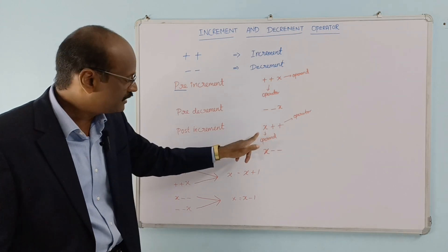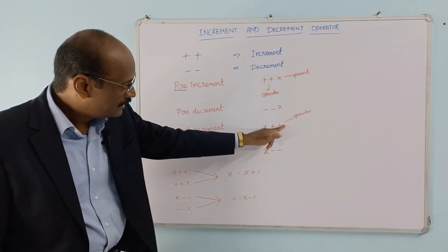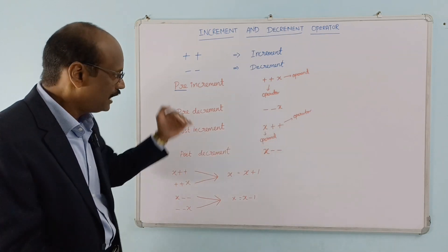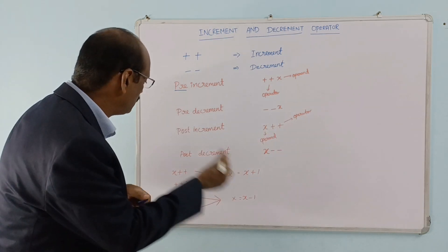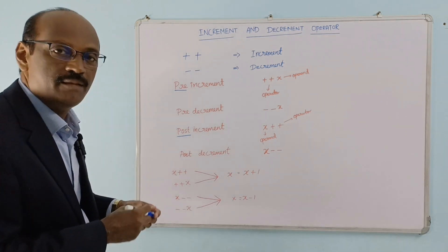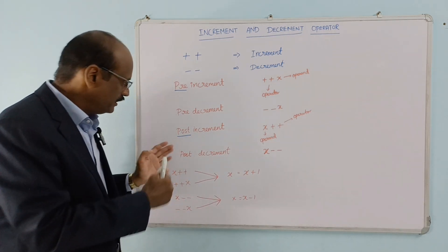In post-increment, the operand comes before the operator. The operand is followed by the operator, so we write x++. This is the naming convention for post-increment.